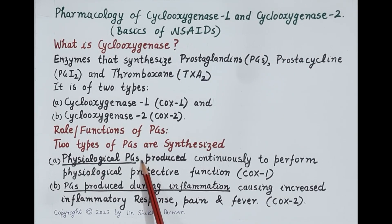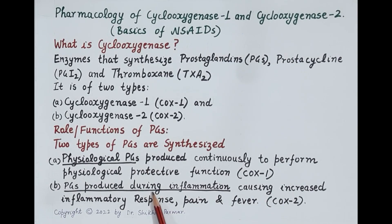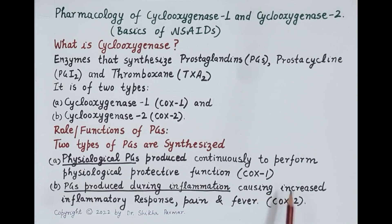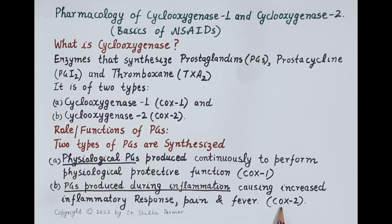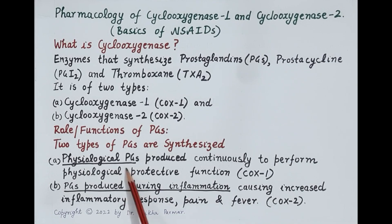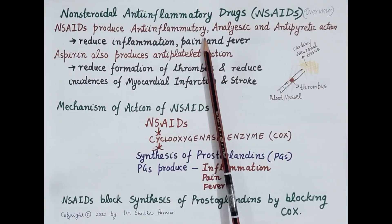In addition to physiological prostaglandins, some prostaglandins are produced in large amounts only during inflammation. These prostaglandins further exacerbate or increase the inflammatory response; they also produce pain and fever. COX-2 is primarily responsible for the synthesis of these prostaglandins. So we have two types: physiological prostaglandins, and prostaglandins that produce inflammation, pain, and fever.